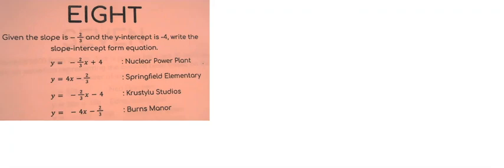Okay, on question 8, it says, given the slope is negative 2 thirds and the y intercept is negative 4, write the slope-intercept form equation.